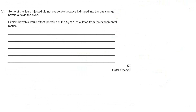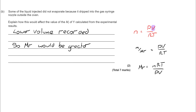On to part B, and we're on to practical skills. How would this problem affect the value of MR? A lower volume would be recorded if the gas did not evaporate. I've written down the molar equation and rearranged it to include M and MR, because what you can then see is the relationship between MR and V. If my volume is lower, that's going to mean a greater MR would be recorded.